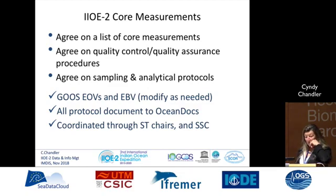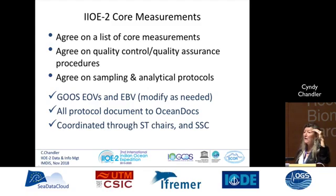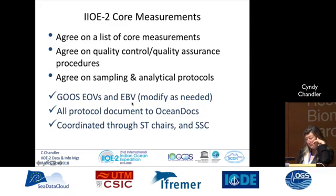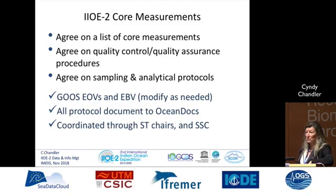One of the other activities was to identify a set of core measurements — not just a list of measurements and definitions, but also the associated quality control, quality assurance, and sampling and analytical protocols for these things, right at the beginning of the program so that data integration later on could be easier. I recommended they not start with a blank piece of paper, but leverage the work already done with the essential variables — EOVs, ECVs, and EBVs — from the Global Ocean Observing System. They agreed with that. Some, especially the biological ones, still need a lot of work, so they may need to interact with the GOOS community to modify things to suit their needs.